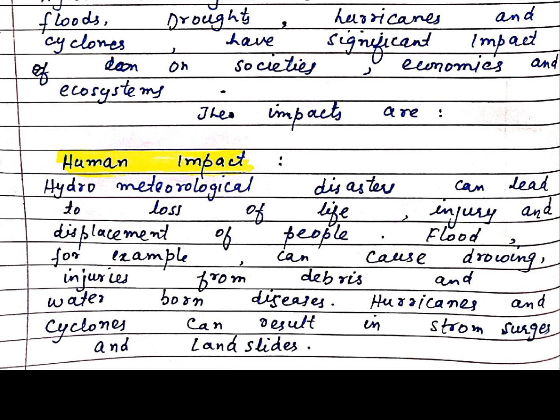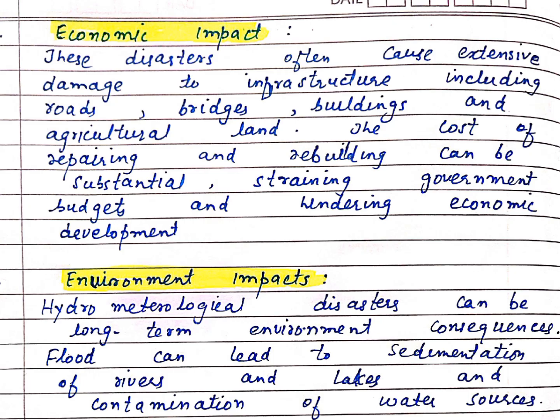Another example is hurricanes and cyclones. Hurricanes and cyclones can result in storm surges and landslides. The human impact of these disasters is very severe.